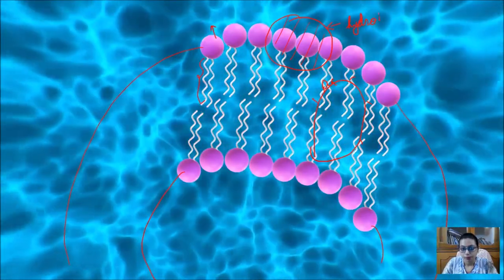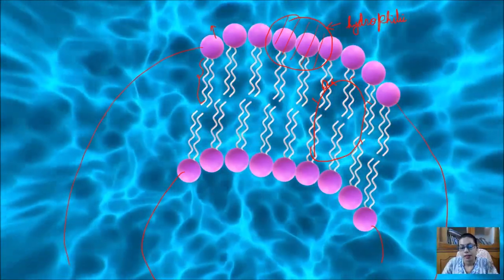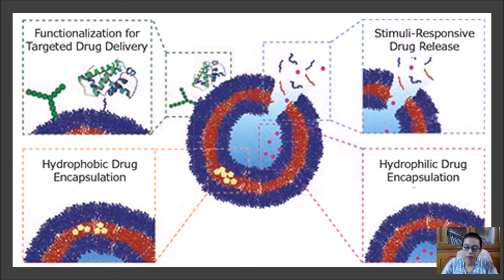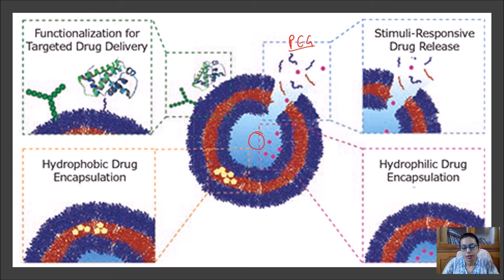Another important role of hydrophobicity in our body is the generation of liposomes, which encapsulate drugs and help in proper drug delivery. Liposomes are also used in plant cell fusion — for example, PEG is used to fuse two protoplasts together to form a hybrid cell. In this way, hydrophobic and hydrophilic interactions play a vital role in our body and in maintaining the structure of biomolecules.